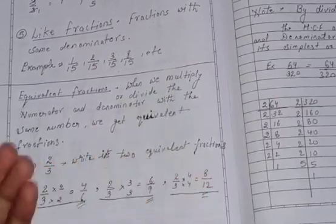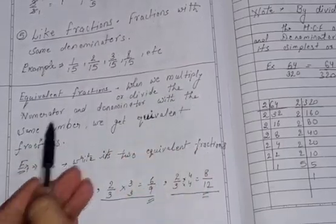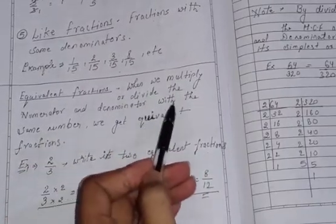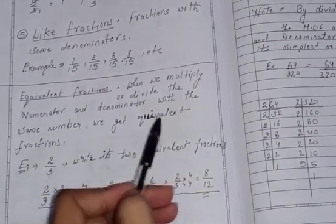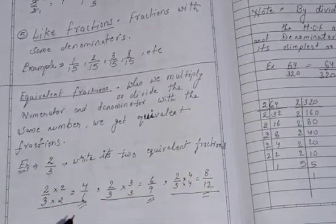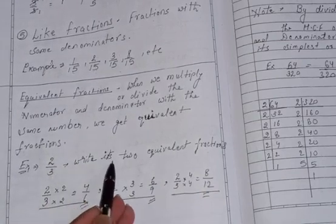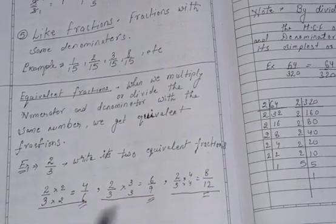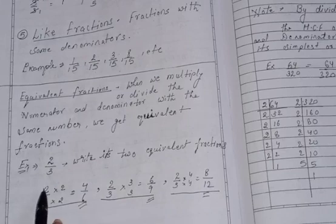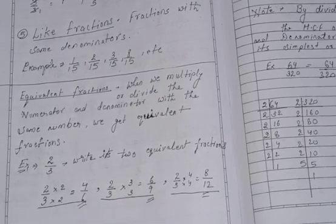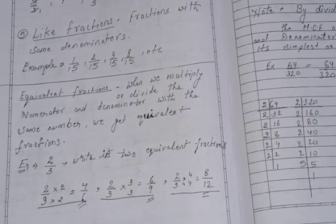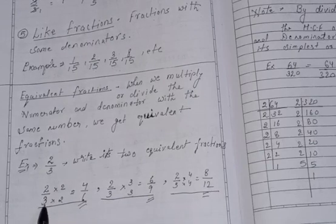When we multiply or divide the numerator and denominator with the same number, we get equivalent fractions. For example, if I say 2 by 3 is a fraction and write its two equivalent fractions. Here I write three equivalent fractions. Like 2 by 3, 2 by 3, 2 by 3. What we will do? To convert, to take out its equivalent fraction, we will multiply the numerator and denominator with the same numbers each time.